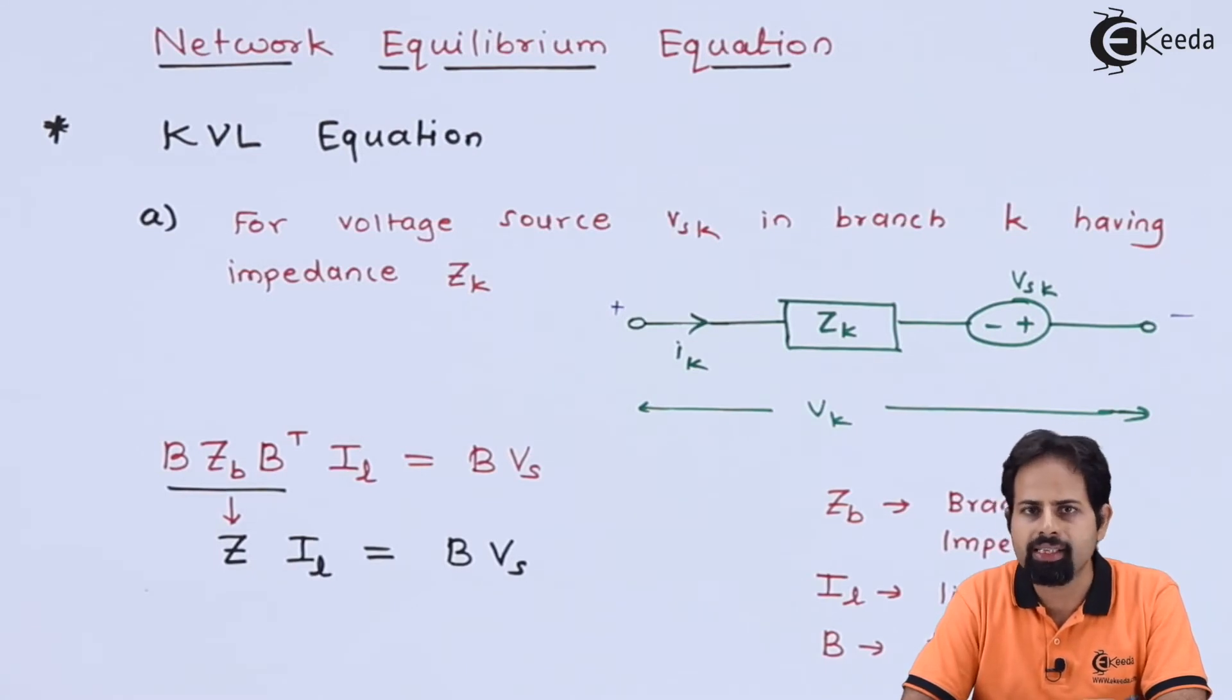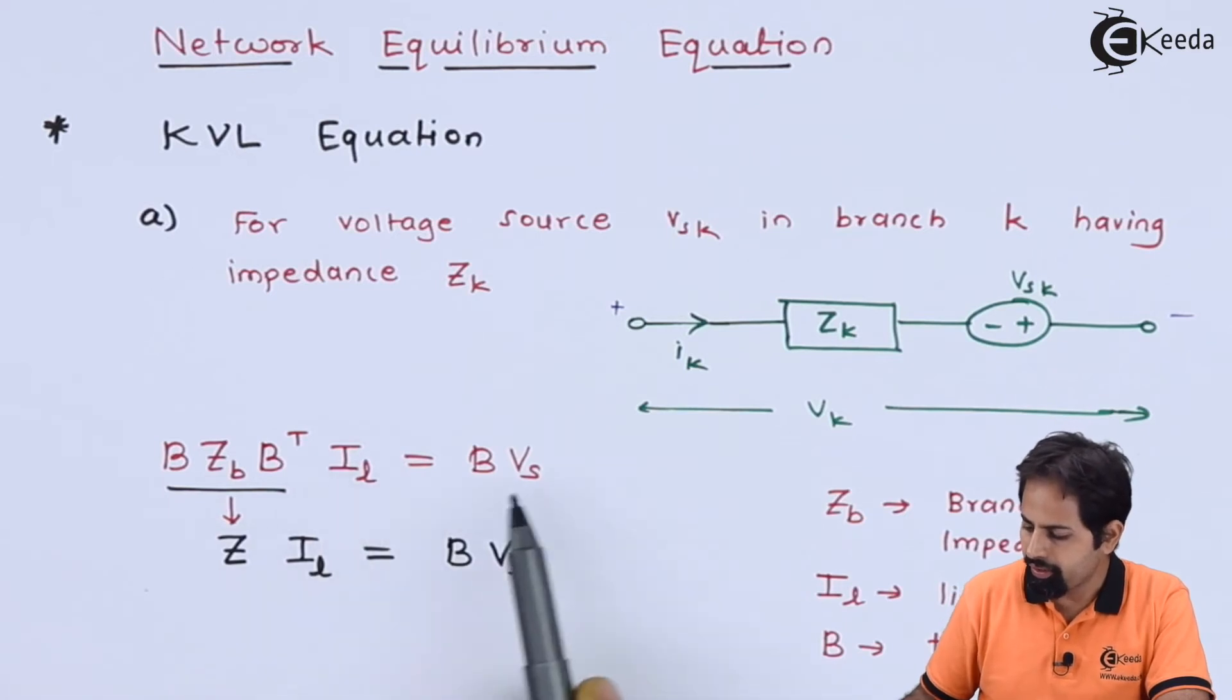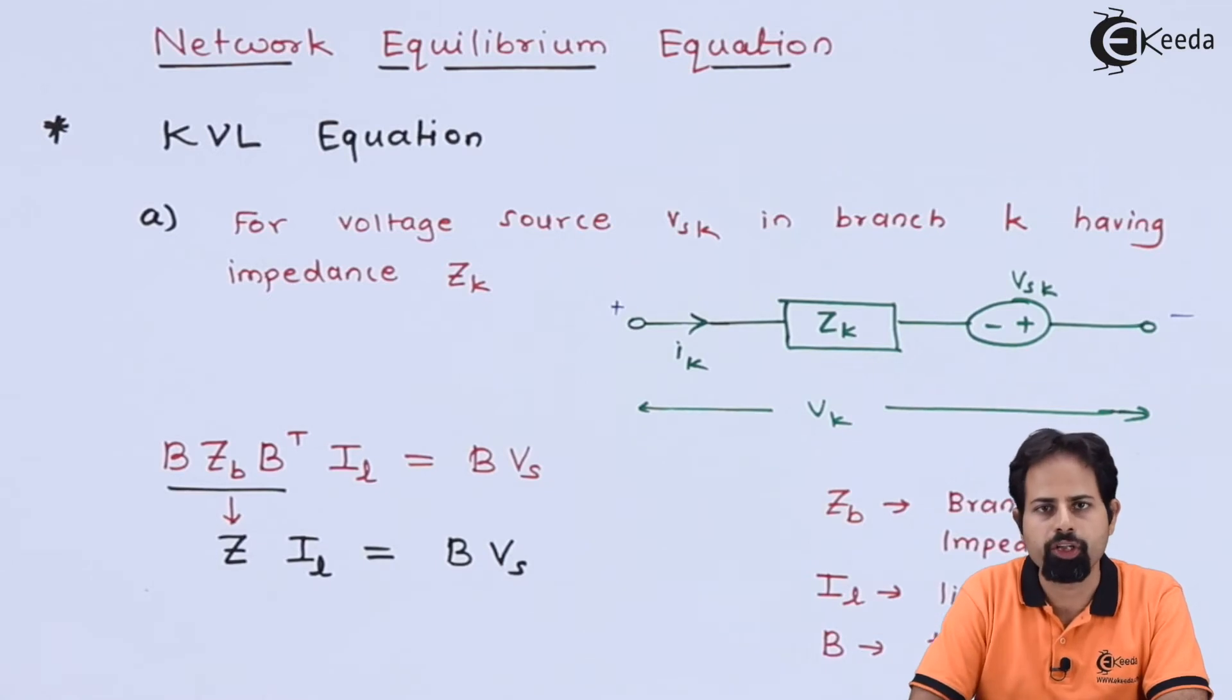IL means link current. There are links as well as tweaks we have seen that in tie set, so it is link current. Again this B is same as tie set matrix and VS is source voltage.